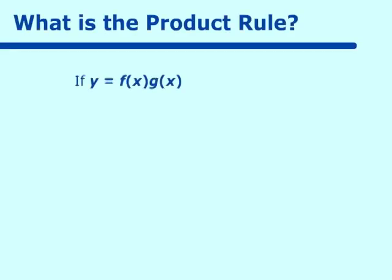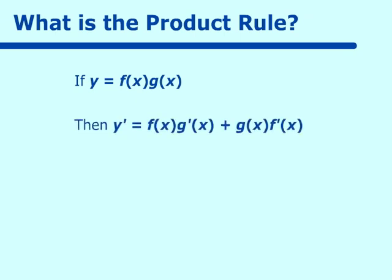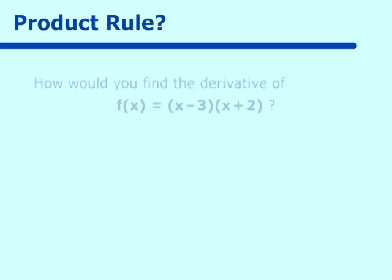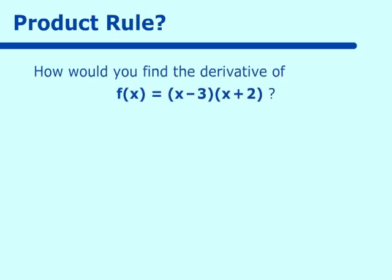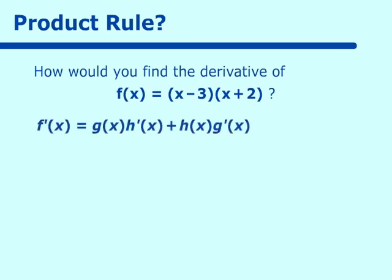What is the product rule? If we have y equal to some f of x times some g of x, then y prime equals f times the derivative of g plus g times the derivative of f — that is, f g prime plus g f prime. For the example f of x equals x minus 3 times x plus 2, I'll rename the factors g of x and h of x, so f prime of x equals g of x times h prime of x plus h of x times g prime of x.